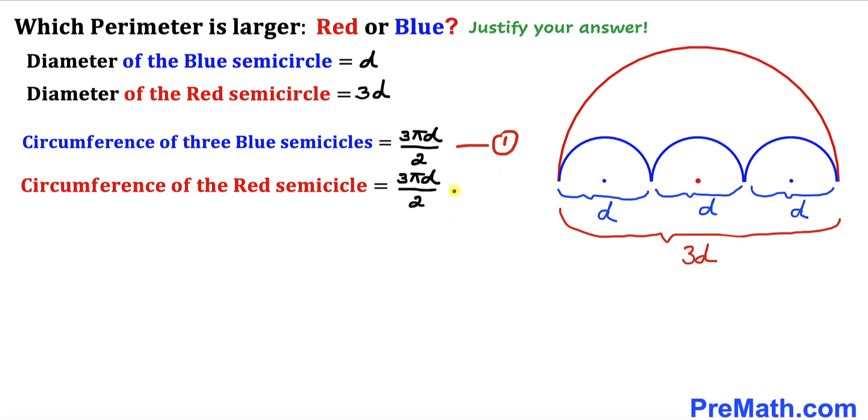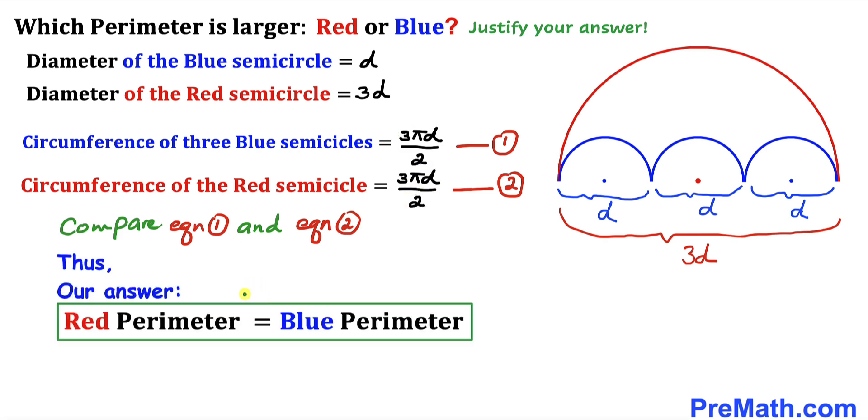Now if we compare equations 1 and 2, we can see that on the right-hand side we have the same quantity. Therefore, we conclude that the red perimeter equals the blue perimeter. Both of them have the same value.